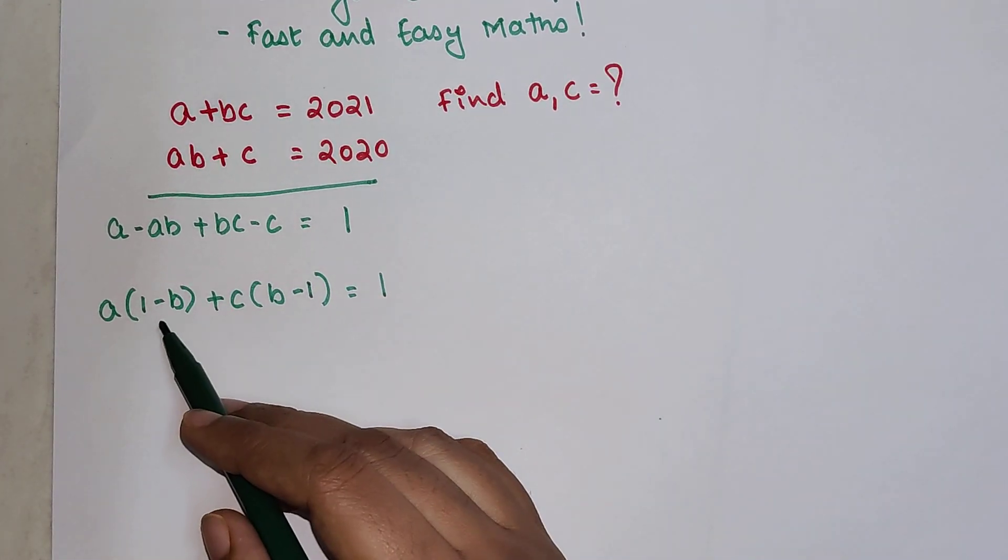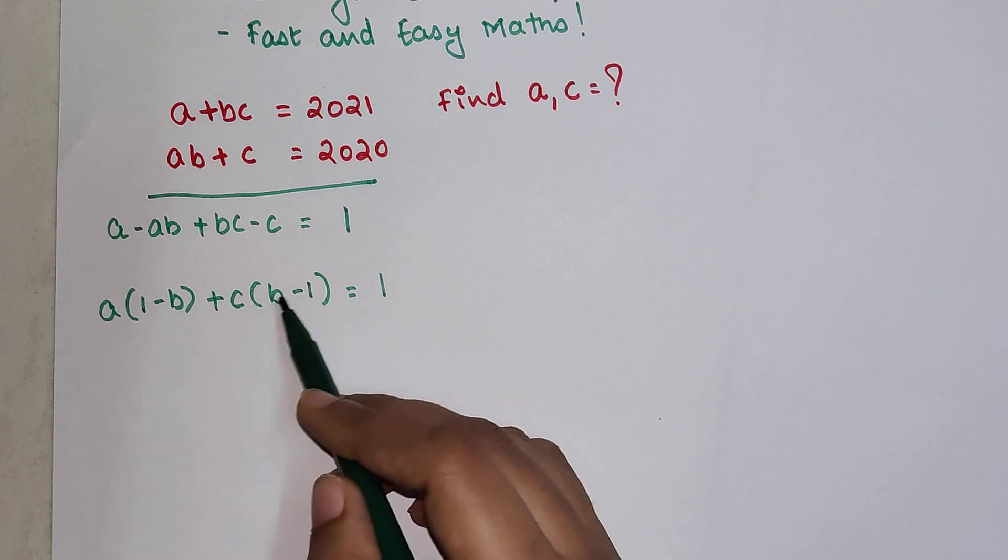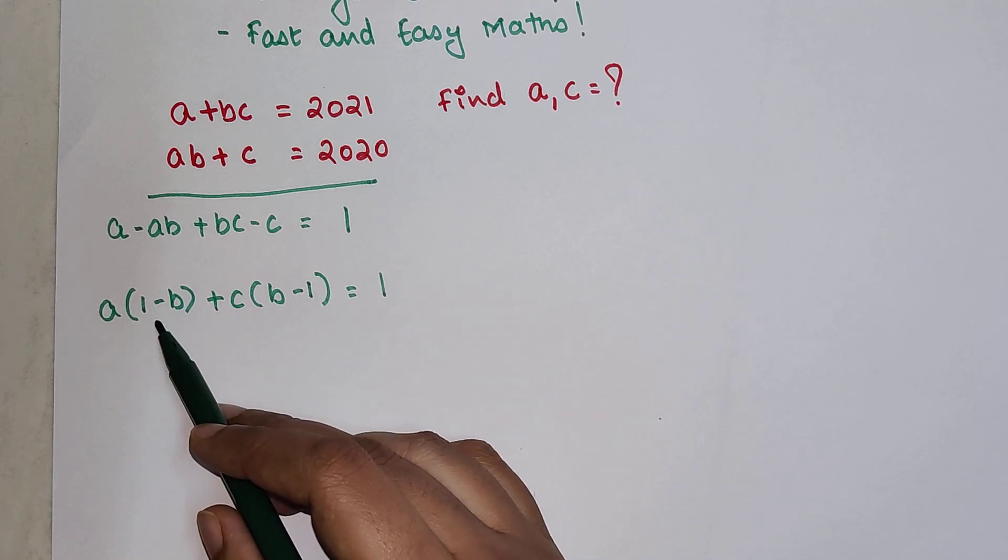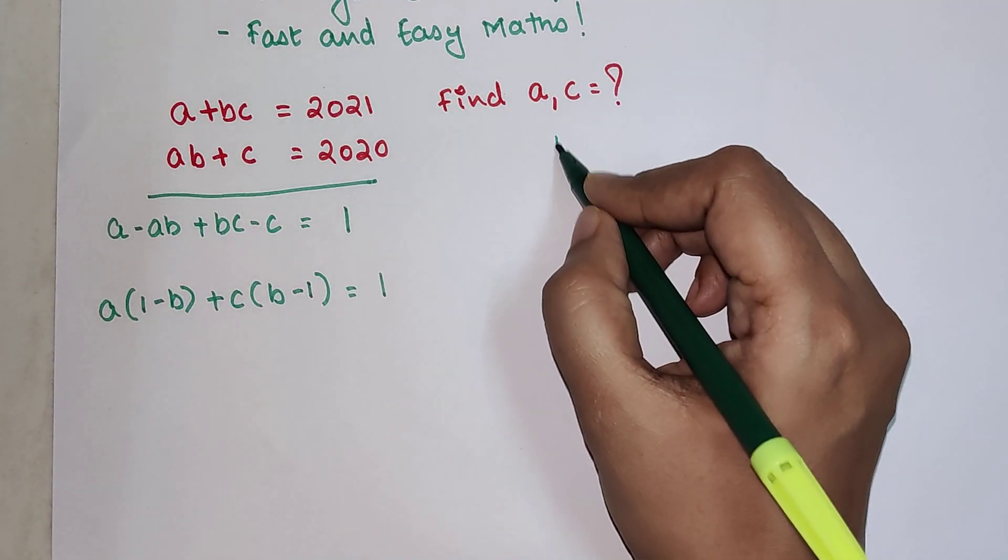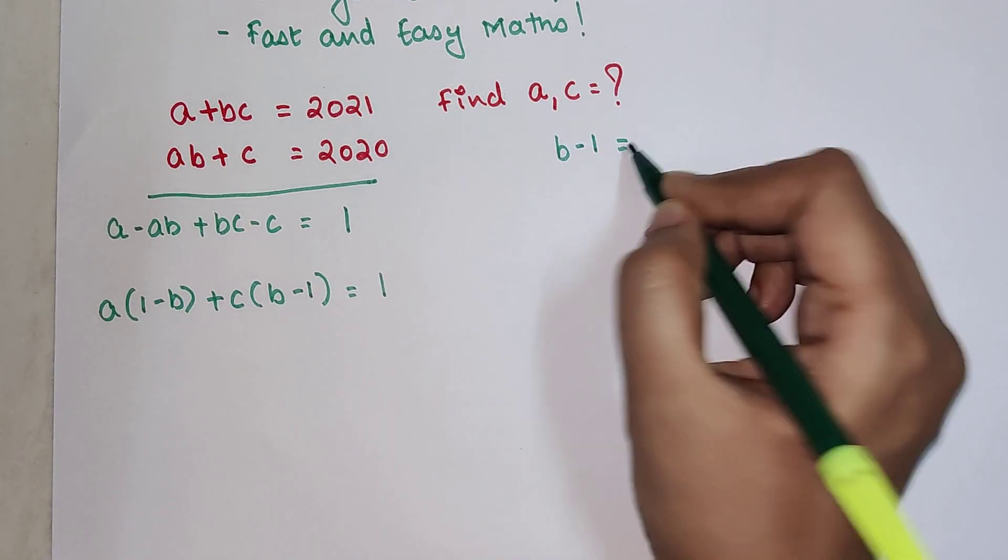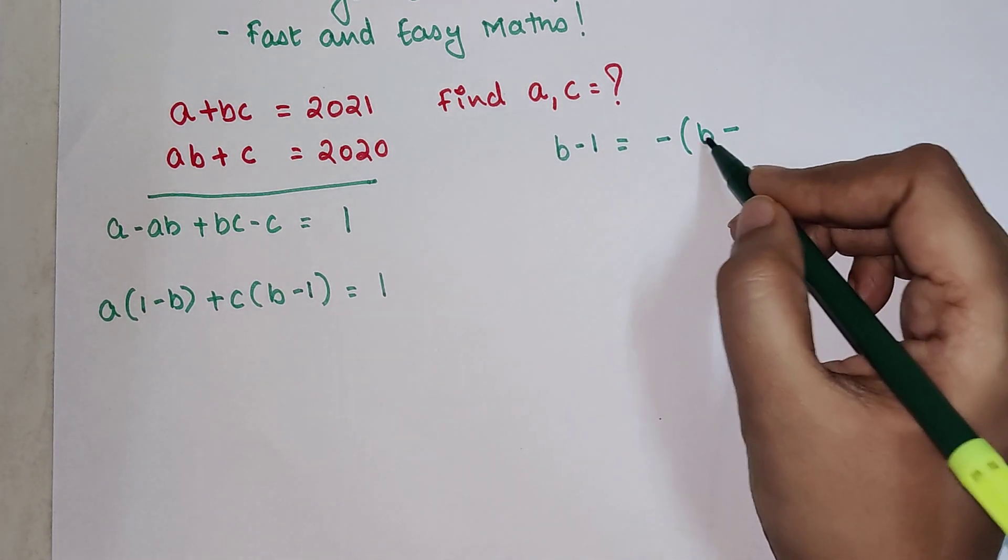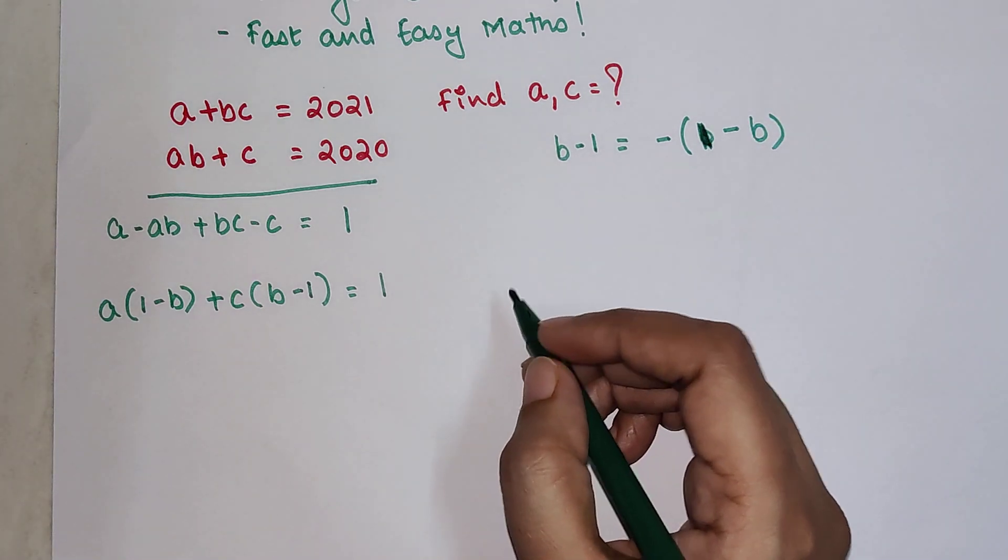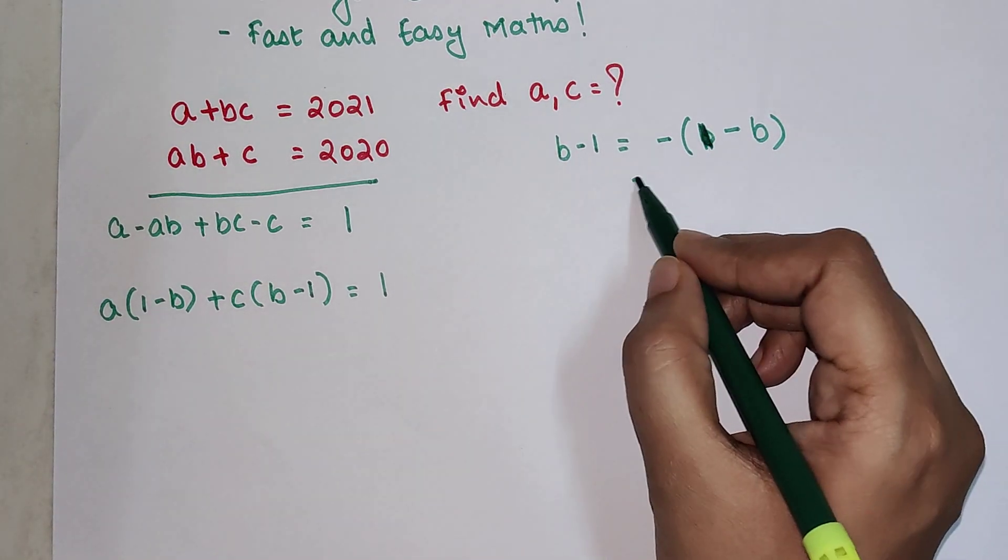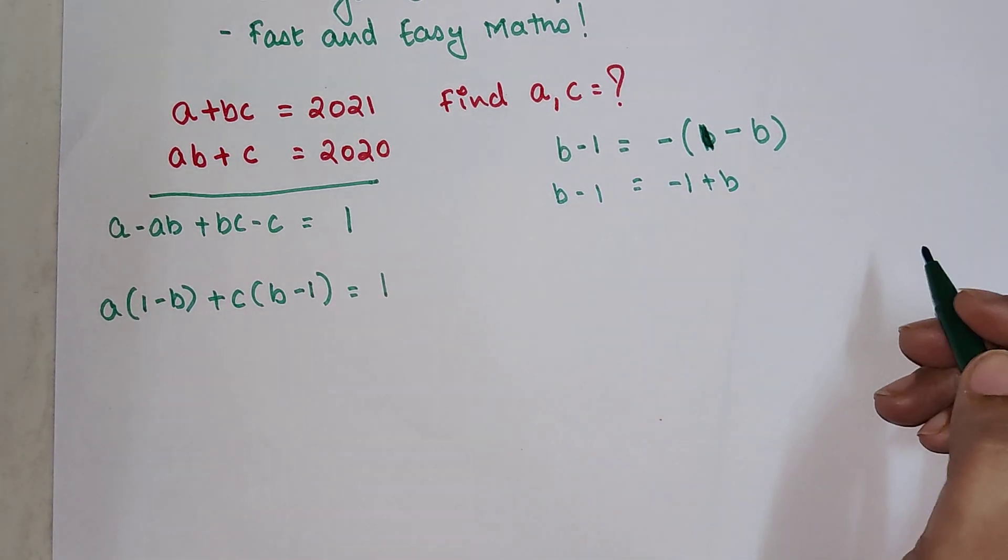Okay so now understand here I have 1 minus B and here I have B minus 1. So if I want to make this similar to this bracket all I will have to do is see I can write B minus 1 equals minus taken outside 1 minus B correct? Because if you open this you get nothing but minus 1 plus B that is exactly B minus 1.